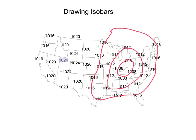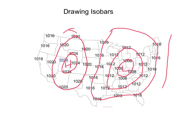Then we're going to come over to the other side of the map and connect our 1,020s and then our 1,024s. Now you're going to look on this map and tell me which one is high pressure and which one is low pressure. The one with the higher number gets the high pressure or the H, and the circle with the lower number gets the L. So that gives us our low pressure center and our high pressure center.